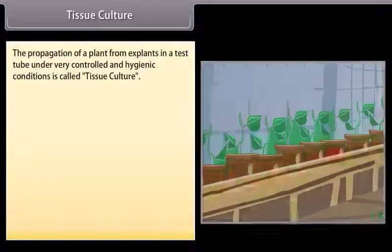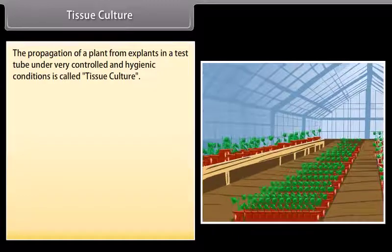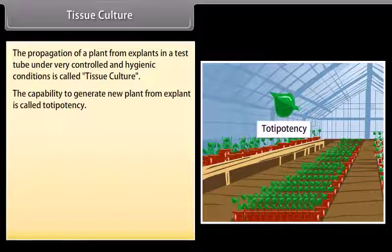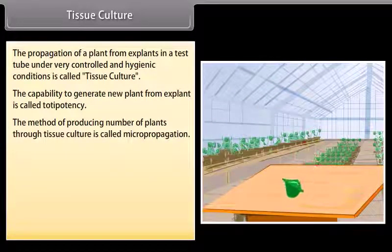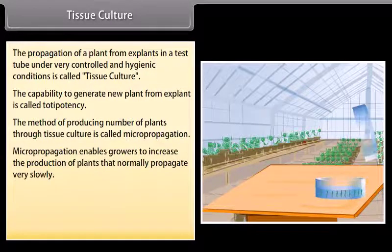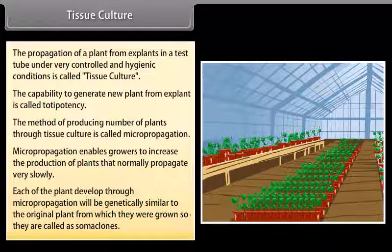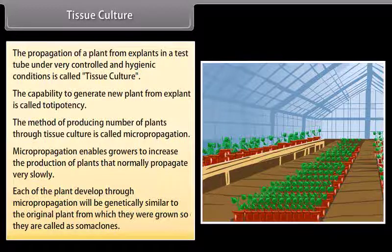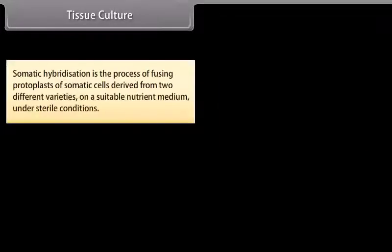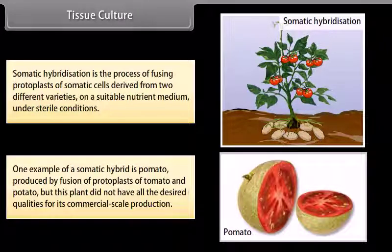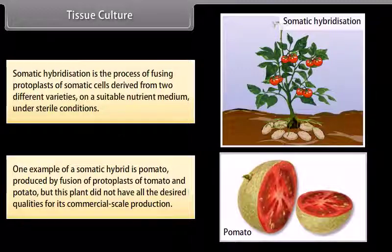Tissue culture: The propagation of a plant from explants in a test tube under very controlled and hygienic conditions is called tissue culture. The capability to generate a new plant from an explant is called totipotency. This method of producing plants through tissue culture is called micropropagation. Micropropagation enables growers to increase production of plants that normally propagate very slowly. Each plant developed through micropropagation is genetically similar to the original, so they are called somaclones. Somatic hybridization is the process of fusing protoplasts from two different varieties; one example is pomato, produced by fusing protoplasts of tomato and potato, though it did not have all desired qualities for commercial production.